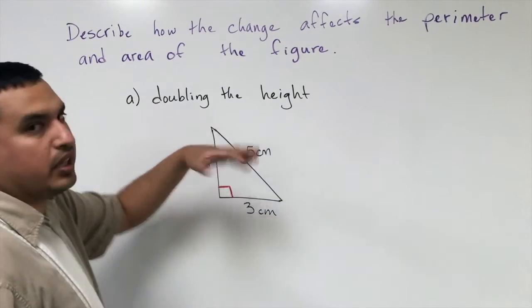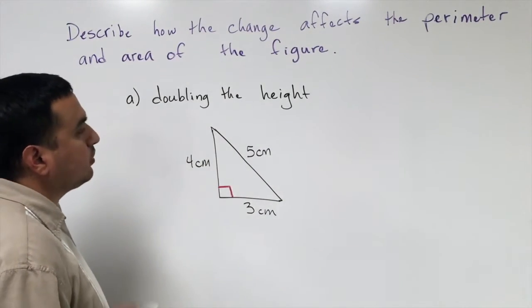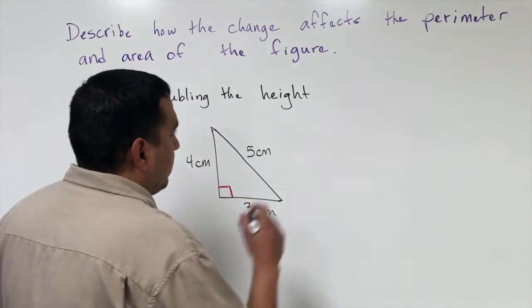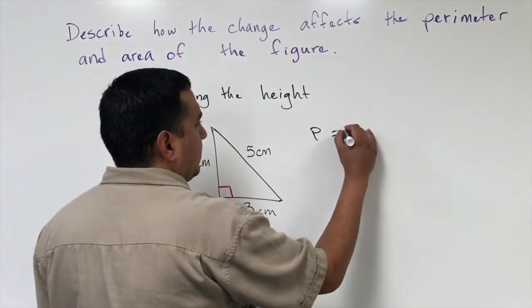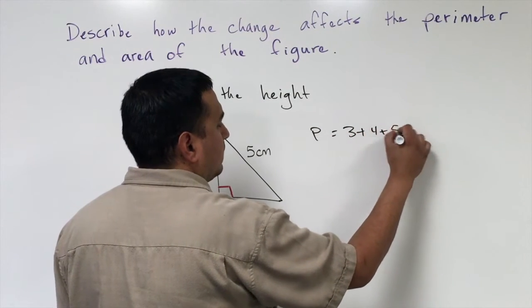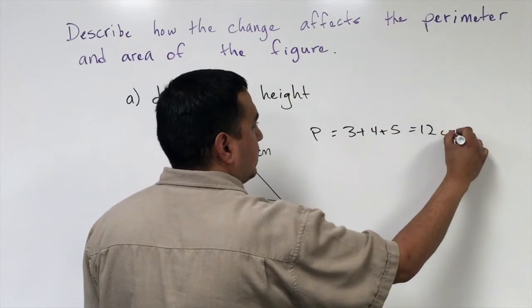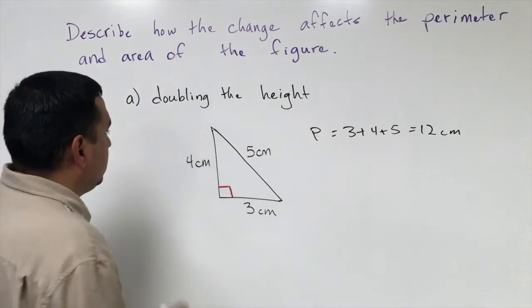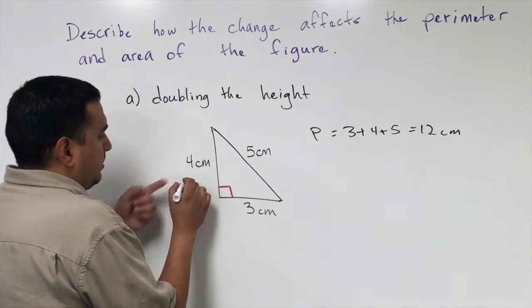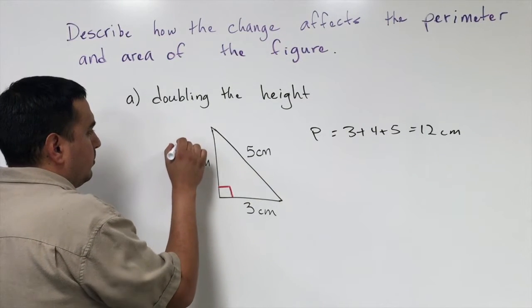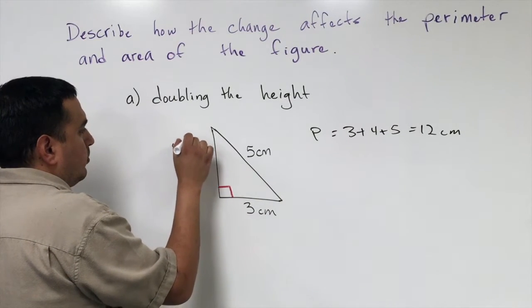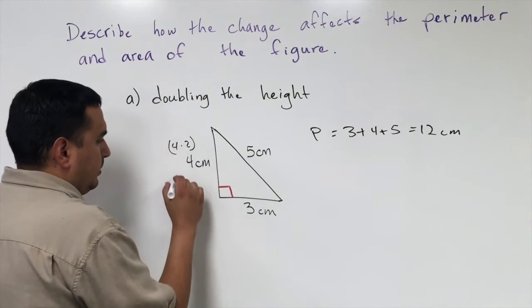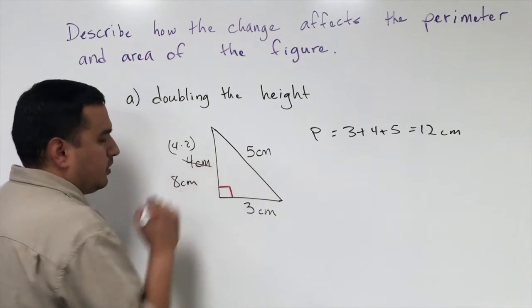They want us to double the height of the triangle. First we want to look at what it was originally before any changes. The perimeter is going to be 3 plus 4 plus 5, which is 12 centimeters. Now if I double the height, I'm going to multiply by 2, so my height is going to be 8 centimeters instead of 4.